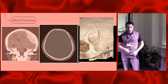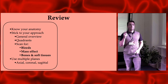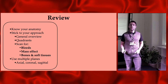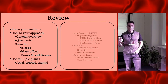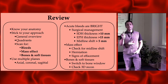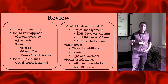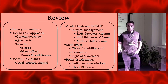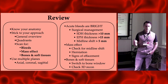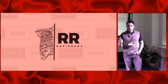In review: know your anatomy, stick to a systematic approach every single time. Scan your quadrants, compare both sides, looking for bleeds, mass effect, bones, and soft tissues in multiple planes — axial, coronal, sagittal. Acute bleeds are bright; the hematoma is bright but the active bleed within it is dark. Thresholds for neurosurgical intervention: subdural hematoma greater than 10 mm, epidural greater than 15 mm, midline shift greater than 5 mm. For mass effect: check midline shift, herniation, and signs of effacement. For bones: switch to bone window and check 3D reconstruction.